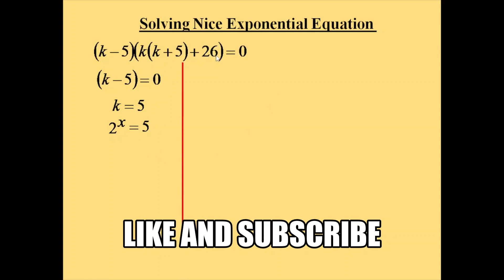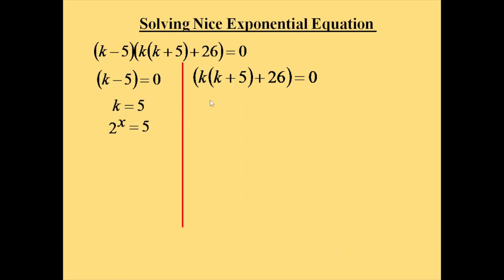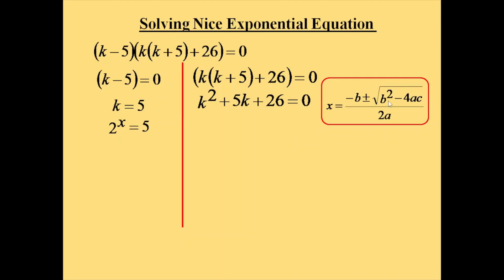Now take the second part: k(k + 5) + 26 = 0. Multiplying k with (k + 5) gives k² + 5k + 26 = 0. This is a quadratic equation of the form ax² + bx + c = 0, and we will apply the quadratic formula to solve it.